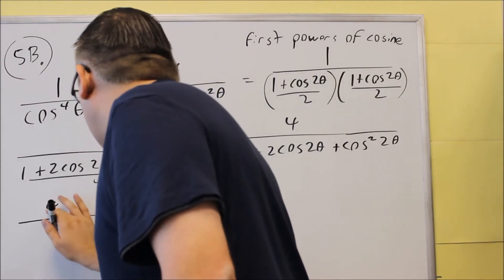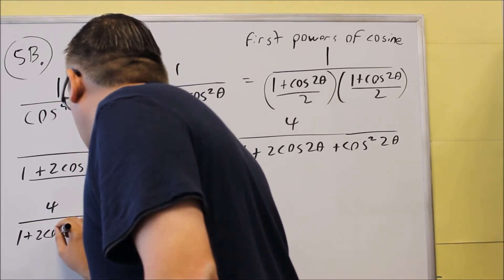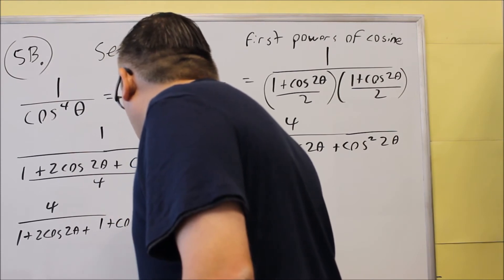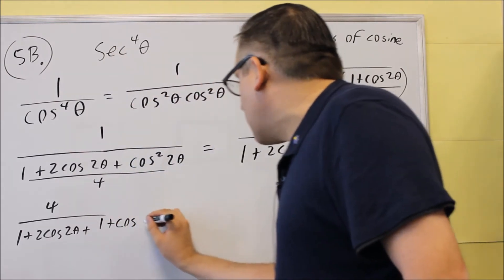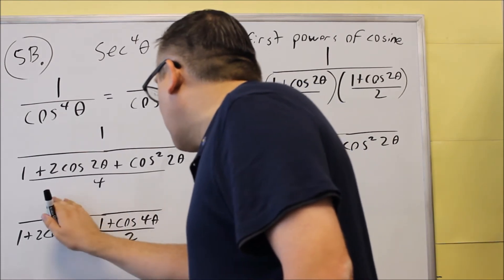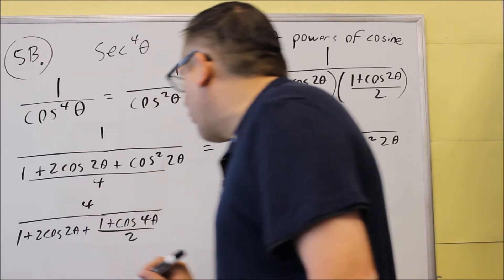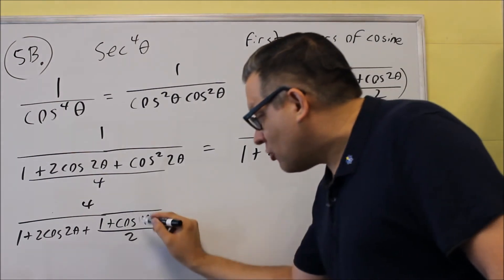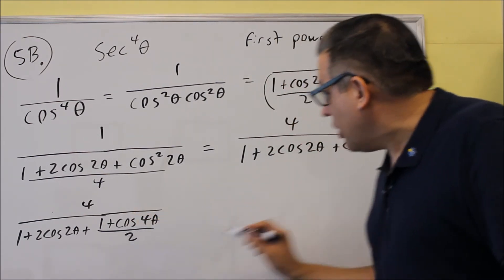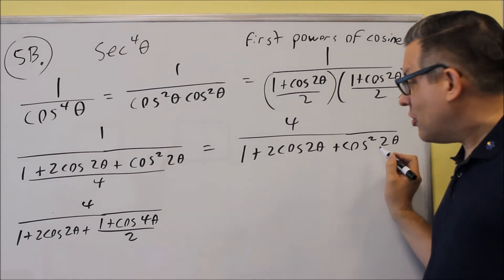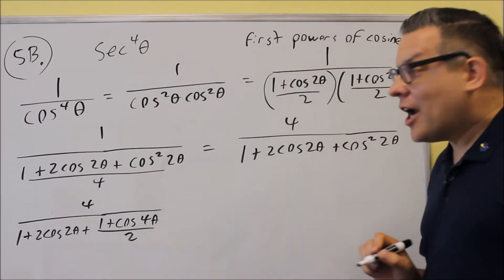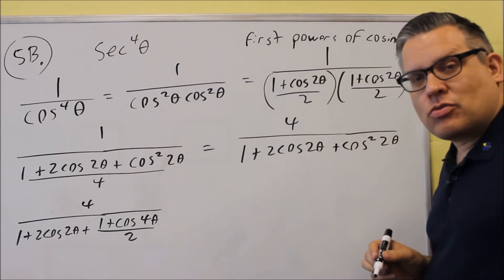So here's what it will look like next. I have 4 over 1 plus 2 cosine 2 theta plus, and I'm going to put the power-reducing formula, 1 plus cosine 4 theta over 2. So I'm going to have a kind of a fraction over a fraction here. In this case, I have a fraction within a fraction going on down there, but that whole thing replaced the cosine squared 2 theta. Again, notice I went from 2 theta to 4 theta inside because that's what it does, what the formula does.